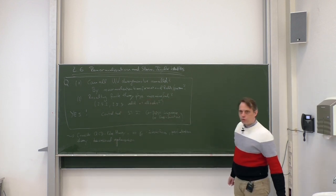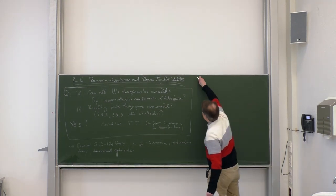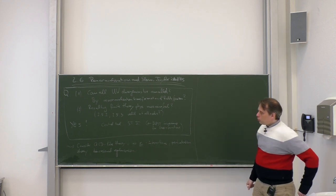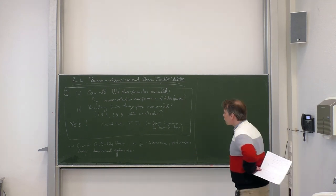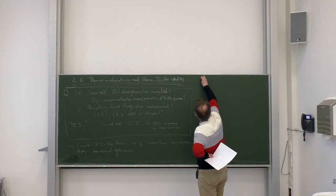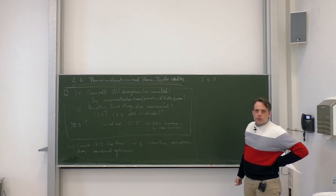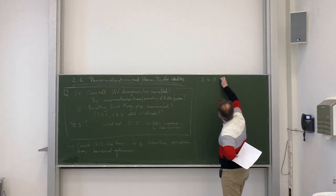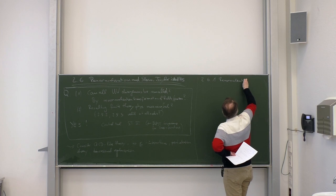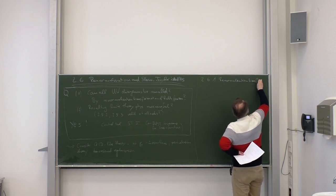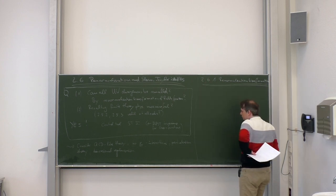With that setup, let us introduce the notion of renormalization transformation. We start with a classical Lagrangian L_cl. We interpret all quantities in d-dimensions for dimensional regularization: all A_μ's are now d-dimensional vector fields, all ∂_μ's are d-dimensional derivatives, and Gamma matrices as well. That gives our regularized theory.